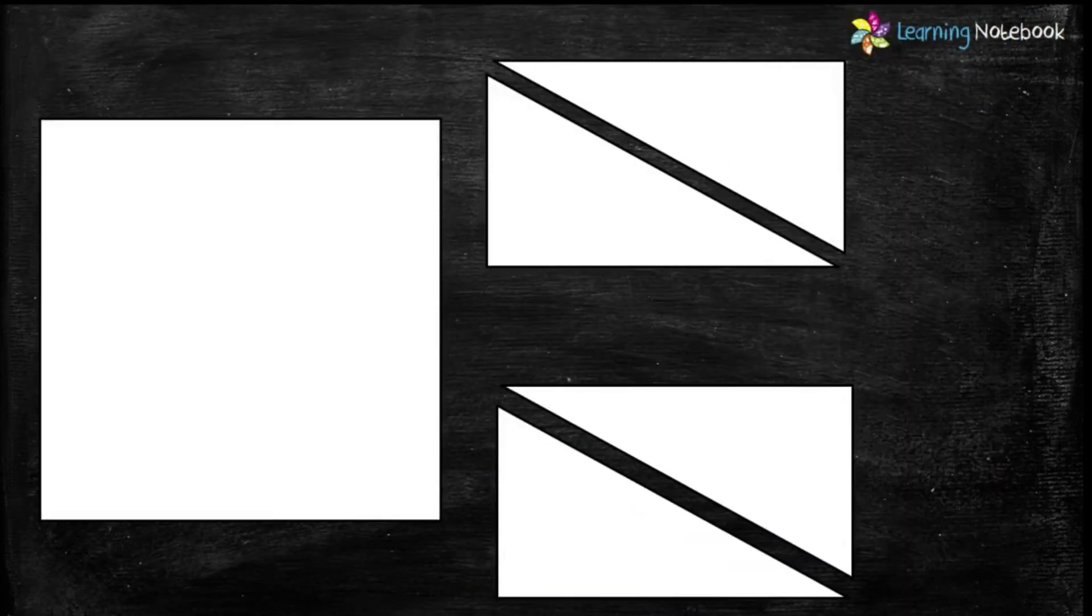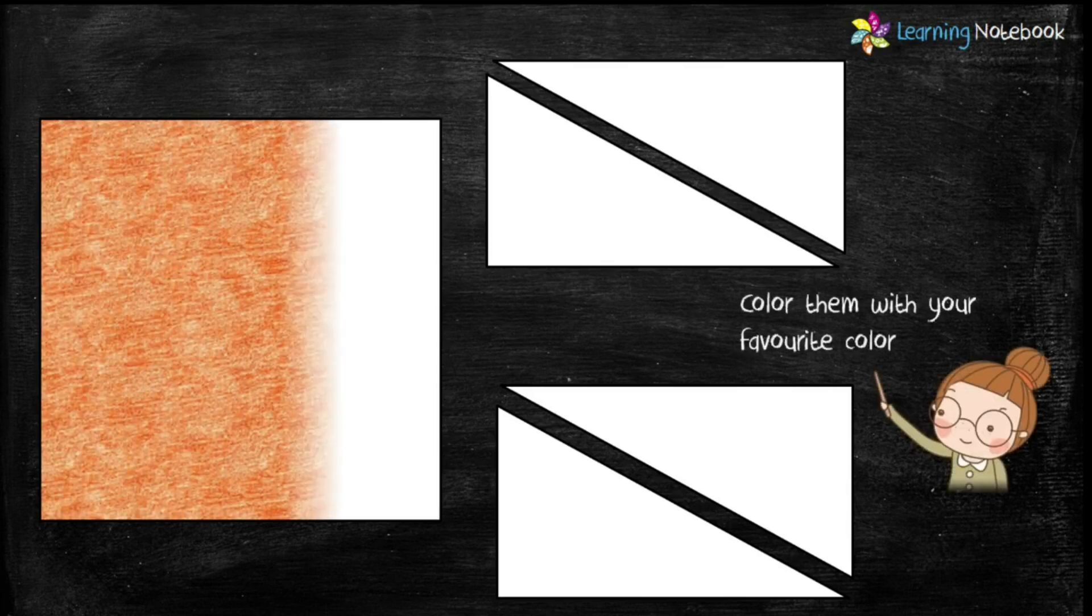So students, now we have got four right-angled triangles of the same length a, b, and c, and a square of size = c. So let's color them.